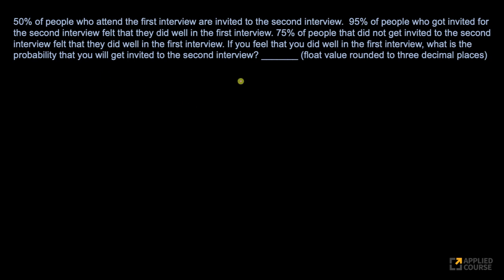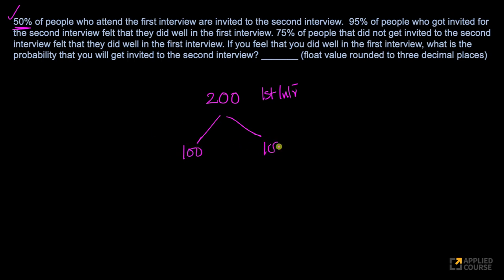Okay, I'm going to assume you've given it a shot. Let's solve this problem by looking at all the facts given to us. I will not use any advanced concepts or formulae — I'll solve it using basic mathematical intuition. Imagine that 200 people attend the first interview. Of these 200, 50% are invited to the second interview, which means 100 are invited and 100 are not invited to the second interview.